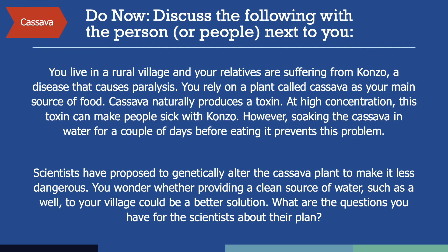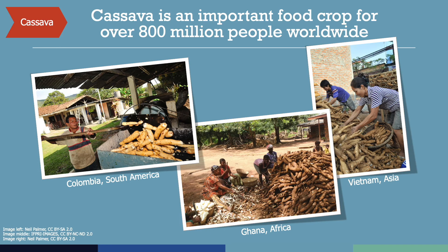Answers to this question vary, but typically include questions along the lines of: What if the genetic alteration makes cassava less safe? Will the alteration of the cassava plant truly fix all the konzo-related problems that the villagers are facing? And will people who are already poor be asked to pay for the altered cassava plant seeds? Cassava is an important crop for over 800 million people worldwide. It is a high-calorie food that can grow in nutrient-poor soil and tolerate drought. Increasingly, the use of cassava is gaining popularity across the world.